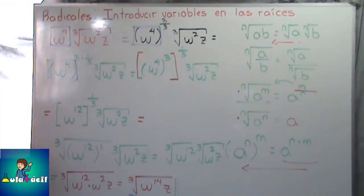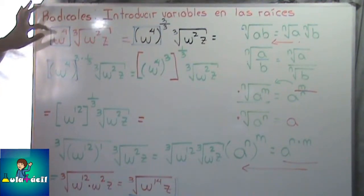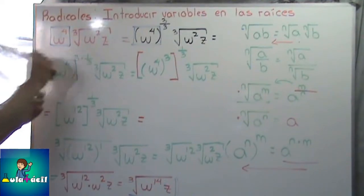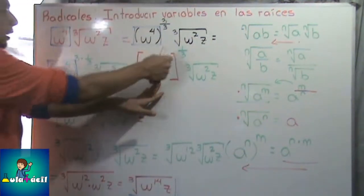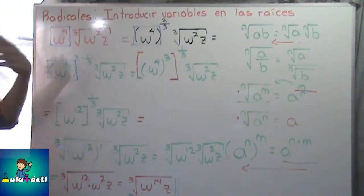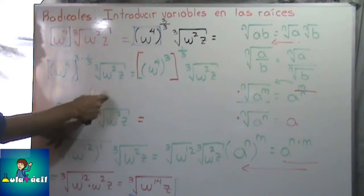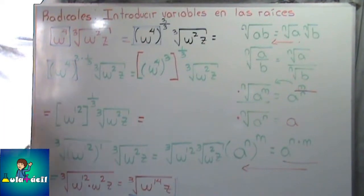Entonces como ven, fue relativamente simple, fue exactamente lo mismo. Aunque la variable de afuera tenía un exponente, no importa — la seguimos ocupando, le agregamos el mismo exponente fraccionario, factorizamos el exponente. Luego aplicamos la ley, y al final redujimos lo que teníamos en el corchete para que nada más tuviéramos una potencia adentro y un exponente fraccionario afuera, con el objetivo de transformarlo a una raíz del mismo tipo. Vamos con otro ejemplo.